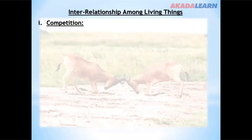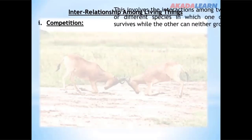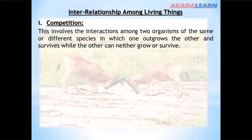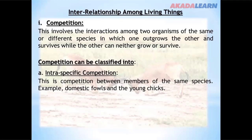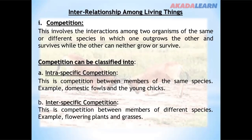Interrelationship among living things. Number one: competition. Competition involves the interaction among two organisms of the same or different species in which one grows and survives while the other can neither grow nor survive. Competition can be classified into two types: intraspecific competition, which is between members of the same species — example, domestic fowls and young chicks — and interspecific competition, which is between members of different species — example, flowering plants and grasses.